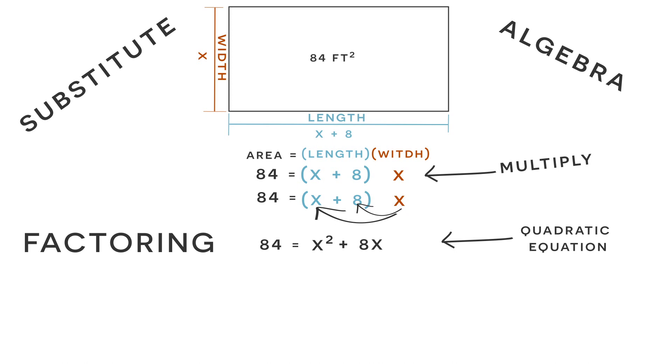So step number one in solving a quadratic equation by factoring is set the equation equal to zero. So let's get rid of this 84 on the one side of the equation by subtracting 84 from both sides. And after we subtract 84 from both sides of the equation, on one side we have a positive 84 and a negative 84, which is equal to zero. And on the other side we have x squared plus 8x minus 84.